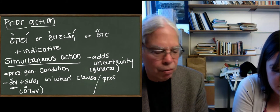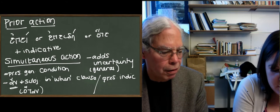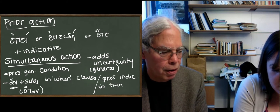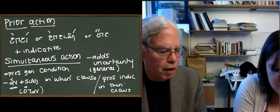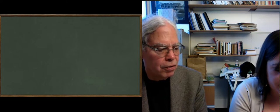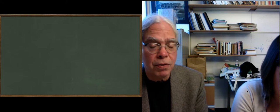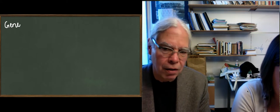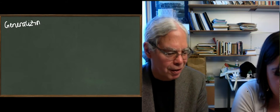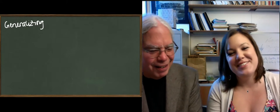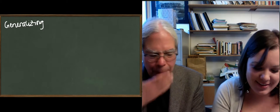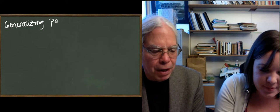So if you can have a present general temporal clause, you can also have a past general temporal clause: 'whenever we built houses, we used bricks.' Again, it's a generalizing thing — it's not about a specific definite act that took place in the past. Generalizing in the past gives us a past general condition.